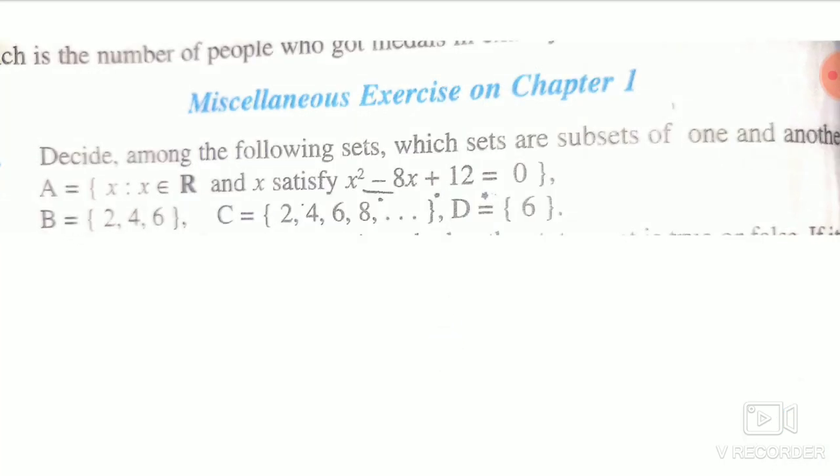6. Set C: 2, 4, 6, 8, ... it is an infinite set. And set D: 6. We can tell which set will be a subset. First, we can